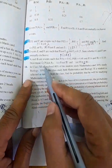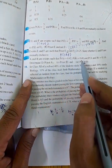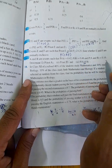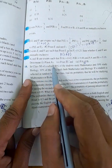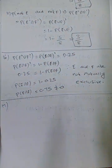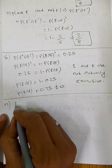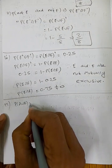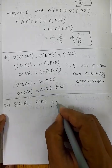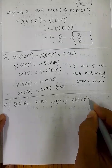So 17th question. If A and B are events such that P(A) is 0.42, P(B) is 0.48, and P(A∩B) is equal to 0.16, find P(not A), P(not B), and P(A or B). The formula: P(A∪B) equals P(A) plus P(B) minus P(A∩B).